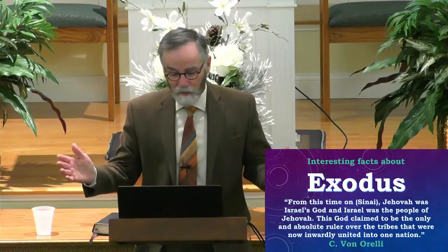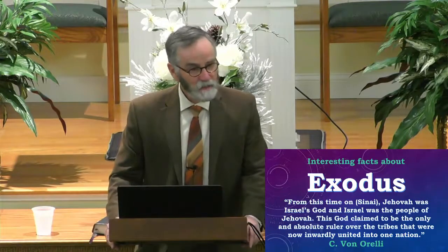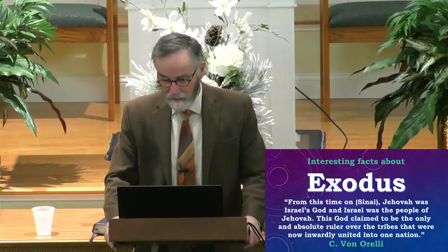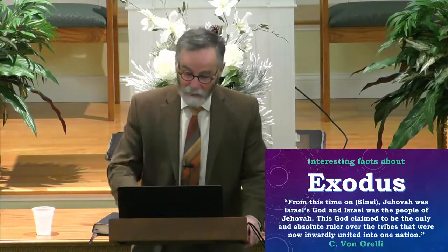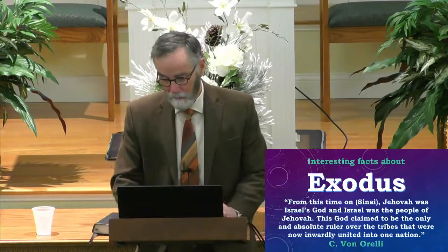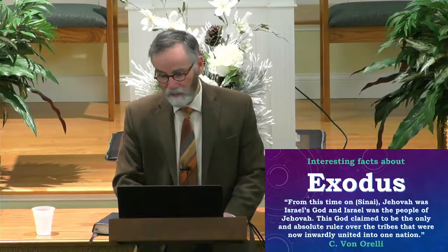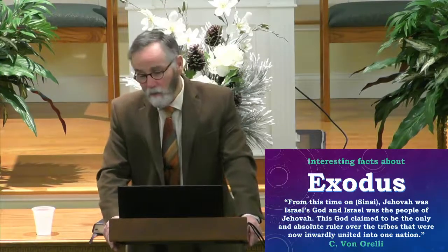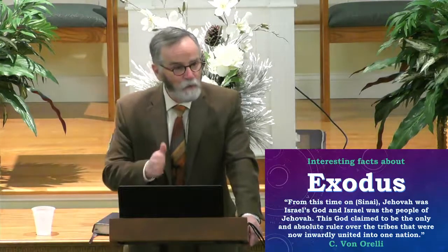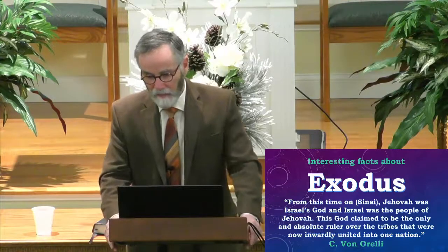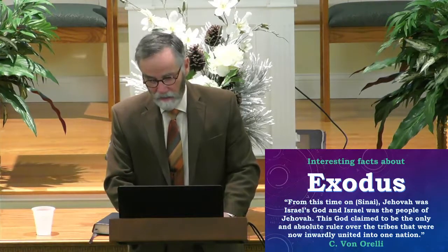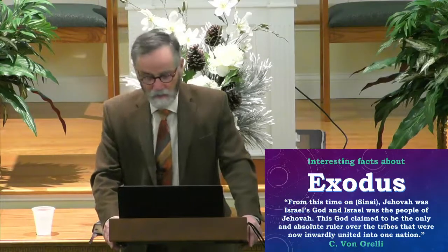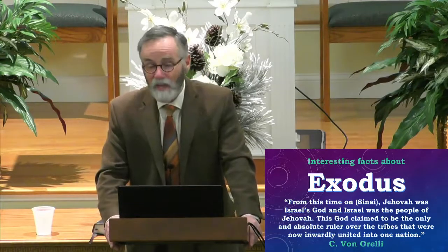Monotheism is revealed to the world in Exodus through the nation of Israel. Beginning with Moses in the book of Exodus, God began to rule on the earth through a man — this was unique among the nations. Israel was a kingdom, but it wasn't like any other kingdom. One thing that made it unique was it didn't have a king. Moses was not technically a king, although he functioned as one. Israel was a kingdom without a king, or at least a human king.